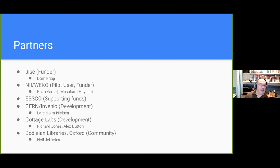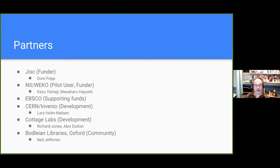In terms of partners: JISC funded us originally. The reference implementation was funded by NII in Japan, and we've had some supporting funds from EBSCO around documentation. The development was handled by CERN Invenio, Cottage Labs — who are InvenioRDM partners — and myself as community lead and partly technically involved.